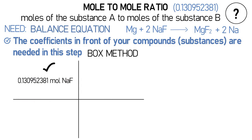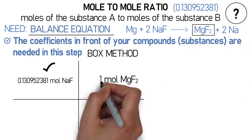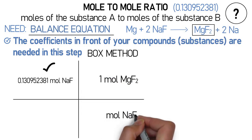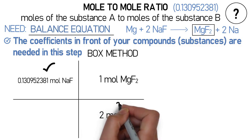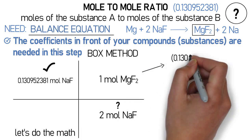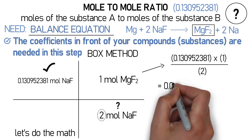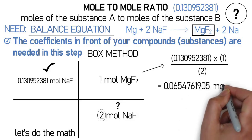In the middle box I place the mole conversion factor — this is where the balanced equation comes in. In the top part of the box I put the moles I want to find, which is magnesium fluoride, using the coefficient from the balanced equation: that is one. In the bottom part of the middle box I place the moles of sodium fluoride, which according to the balanced equation is two — sodium fluoride is on the bottom because it's the unit I'm canceling out. Multiplying 0.130952381 times 1 and dividing by 2 gives 0.0654761905 moles of magnesium fluoride.